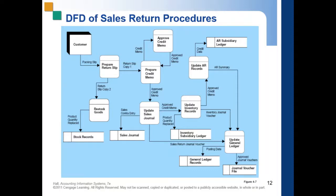The goods along with a copy of the return slip go to the warehouse to be restocked. One copy of the return slip goes to the warehouse, where they update the stock records. Note that this is only for warehouse management system — it is not yet recorded in the books.